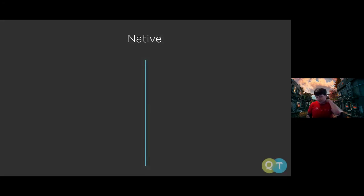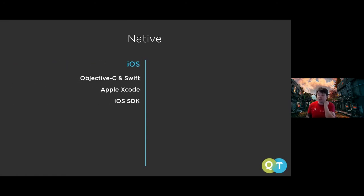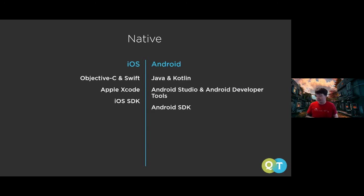For native development in the mobile context, you have two choices. For iOS, you'll use Objective-C and/or Swift, Apple's Xcode, and the iOS SDK. For native Android, you'll use Java and/or Kotlin, Android Studio with the Android developer tools, and the Android SDK.